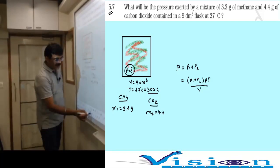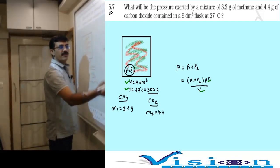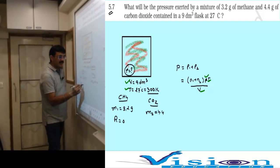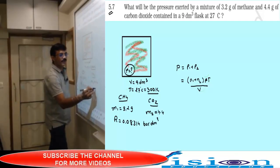Volume is 9 decimeter cube, temperature is 27 degrees Celsius, which equals 300 Kelvin. What should be the pressure of the mixture? The simple way is p total equals p1 plus p2, or we can use p equals n1 plus n2 RT by V. The R value is 0.08314 bar decimeter cube mole inverse Kelvin inverse.